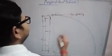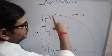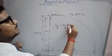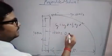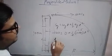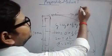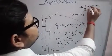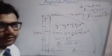Suppose an object is thrown horizontally at 10 m/s from the top of a tower of height 100 m. To find the range, you first need to find the time it takes to strike the ground. Using s_y = u_y·t + ½·a_y·t²: s_y = −100 m (downward), u_y = 0 (horizontal throw), a_y = −10 m/s². This gives −100 = −5t², so t² = 20, meaning t = 2√5 seconds. The range is then s_x = u_x · t = 10 × 2√5 = 20√5 meters.